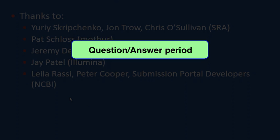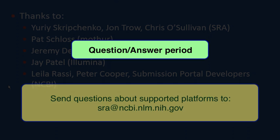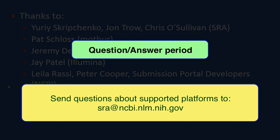It looks like we've answered a bunch of technical questions. Are there any questions specifically about SRA? Someone had a question about what types of data are supported on SRA. Illumina does account for many of our sequences. However, we support an enormous amount of next-generation sequencing platforms, including 454, PacBio, IonTorrent, and many others. Pretty much any platform you can think of. And if your sequencing platform isn't supported, please send us an email at SRA at NCBI.